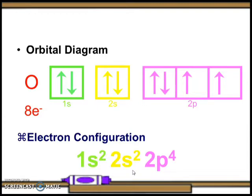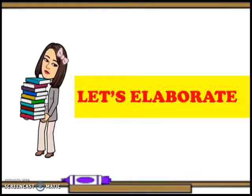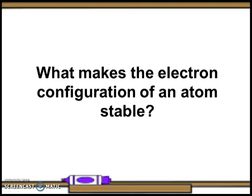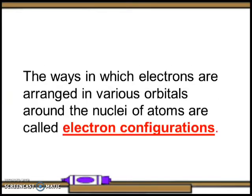Do you see any pattern in the electron configuration and the orbital diagram of the oxygen atom? To find out, let's discuss what makes the electron configuration stable. Energy and stability play an important role in determining how electrons are configured in an atom. Electrons and the nucleus interact to make the most stable arrangement possible. Filling of electrons starts from the lowest energy level to the highest. The ways in which electrons are arranged in various orbitals around the nuclei of atoms are called electron configurations.